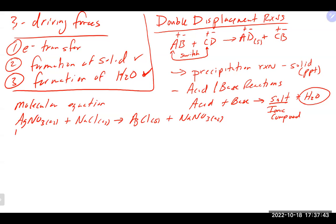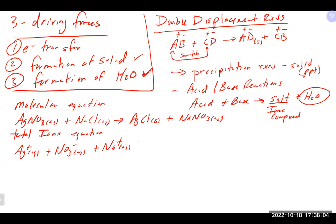When we write a total ionic or complete ionic equation, we break apart everything that's a strong electrolyte. Anything that is a weak electrolyte, a solid, a liquid, or a gas stays together. So the silver nitrate and sodium chloride would break apart, but the silver chloride — being a solid — stays together. Sodium nitrate also breaks apart into ions.